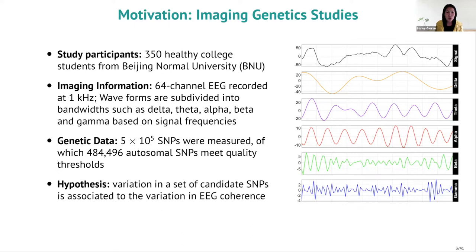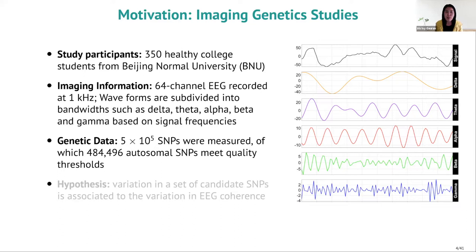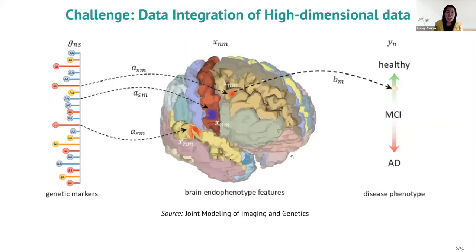Using this brain imaging information, we also wanted to look at the genetic information of these subjects. In particular, five times ten to the five, or around 500,000 SNPs were measured, of which only 484,496 autosomal SNPs — single nucleotide polymorphisms — met the quality thresholds. We can see right away that the data structure presents a challenge: we have very few subjects relative to the brain information and genetic information we have. The question is how we integrate high-dimensional data from different sources intelligently.